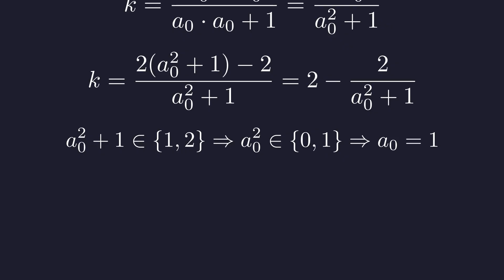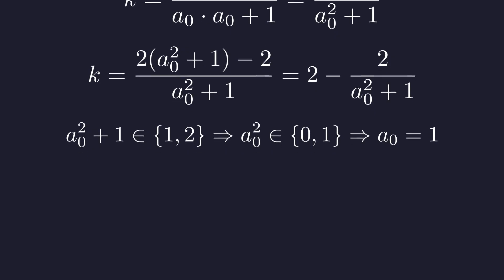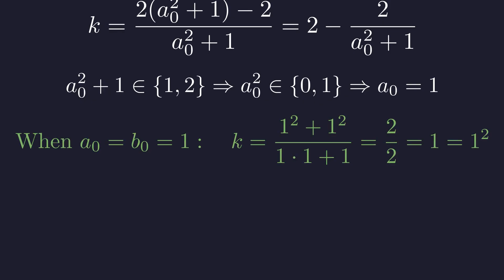Since a0 is positive, a0 squared plus 1 is at least 2. For it to divide 2, it must equal 2, which means a0 equals 1. But when a0 and b0 both equal 1, we get k equals 1, which is a perfect square. This contradicts our assumption that k is not a perfect square. Therefore, in our minimal solution, a0 cannot equal b0.